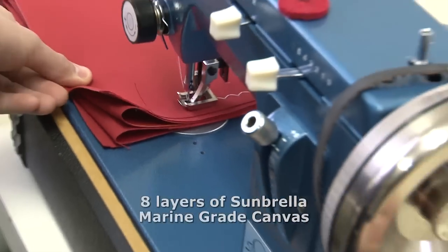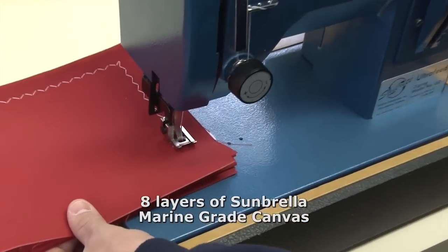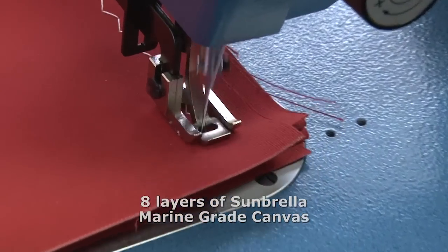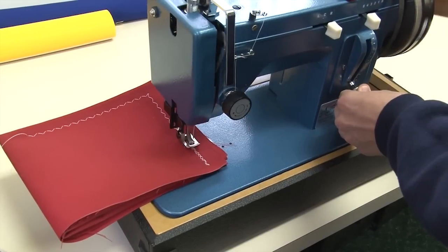Simply grab the hand crank handle and turn it towards you. It works beautifully. This is eight layers of Sunbrella fabric and it sews through it just beautifully without much effort.